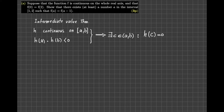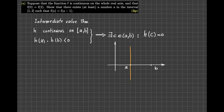Let me draw some graphs to motivate you about the content of this theorem. Assume this is my x-axis and this is my y-axis. Let this point be a and this point be b. I want to concentrate on the closed interval from a to b, so let me drop vertical lines from these two points and concentrate on what is happening in between. My function h is continuous on this interval, meaning I can draw its graph with one pen stroke.